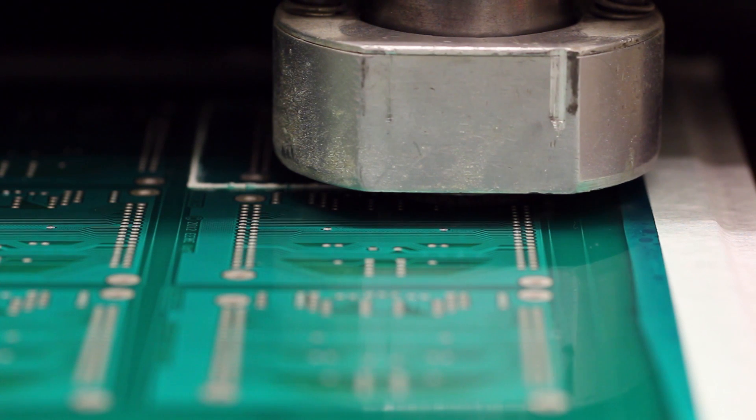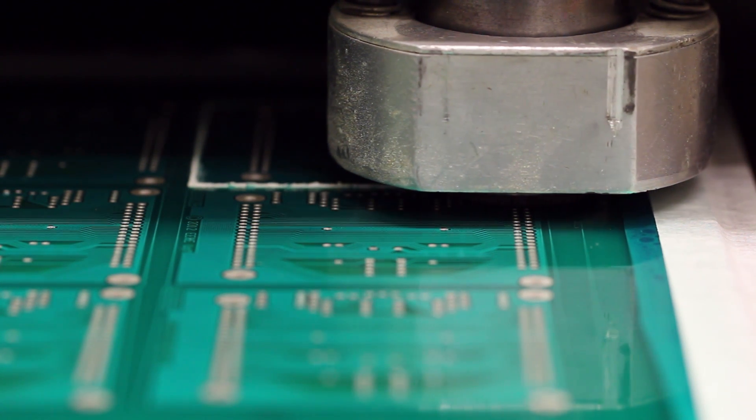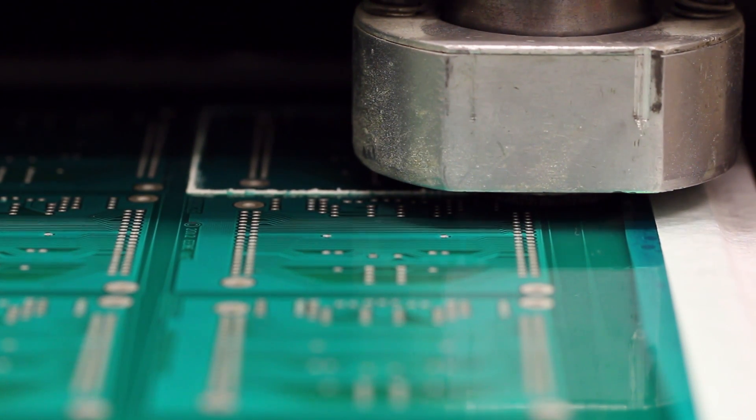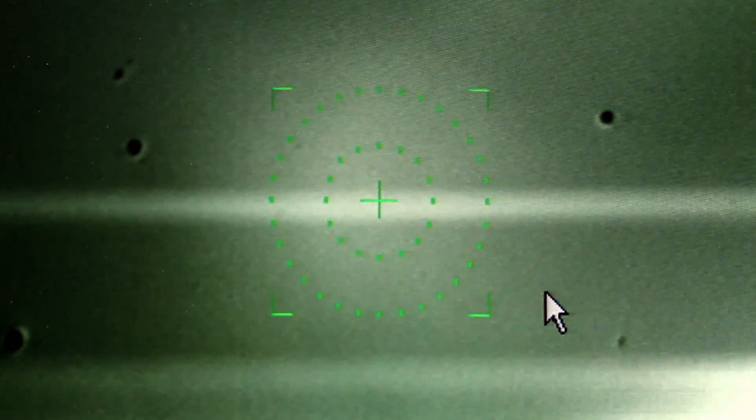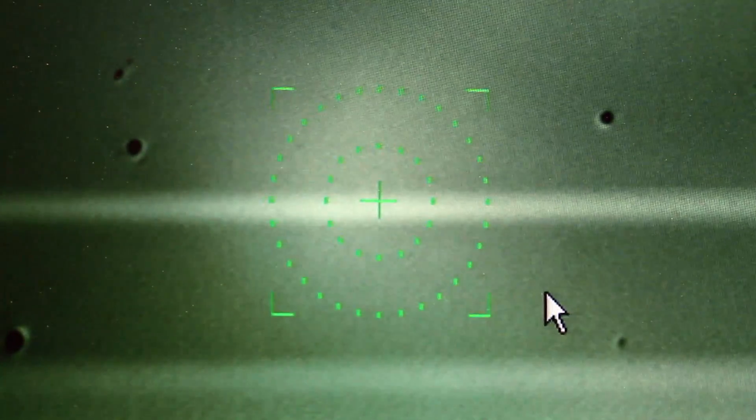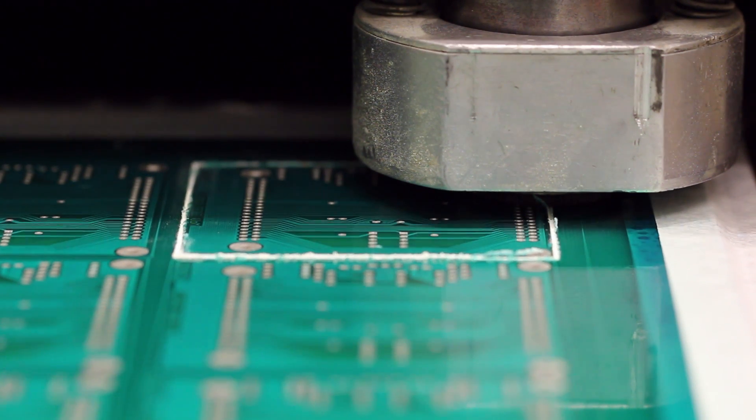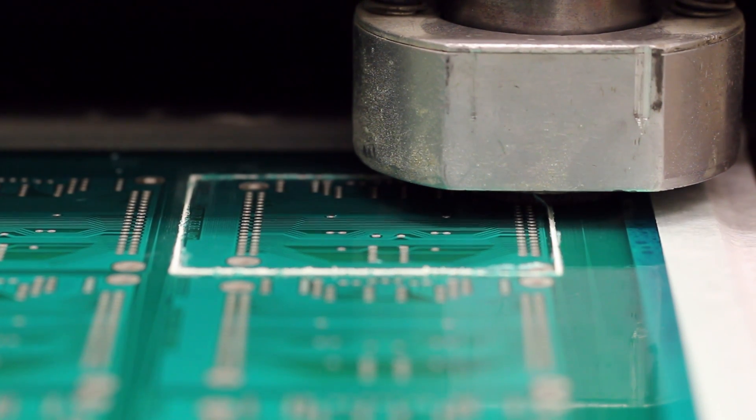Once the curing process is completed the board is cut into its individual designs using a steerable routing bit on a drill bed which follows the cutout track in the design on the top layer. Once cut the completed boards are returned to the designer.